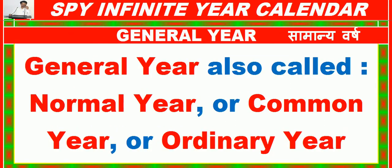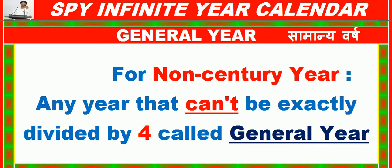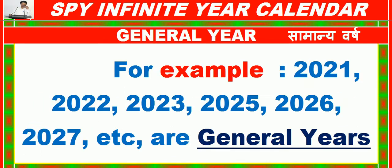A General Year is also called a Normal Year, Common Year, or Ordinary Year. For non-century years, any year that cannot be exactly divided by 4 is called a General Year. For example: 2021, 2022, 2023, 2025, 2026, 2027, etc. are General Years.